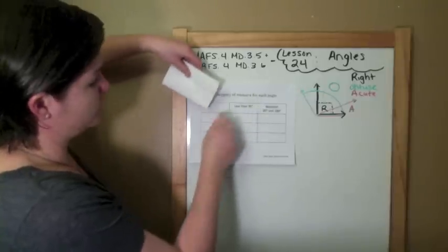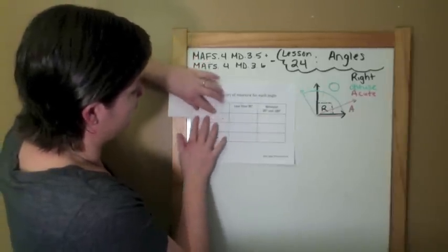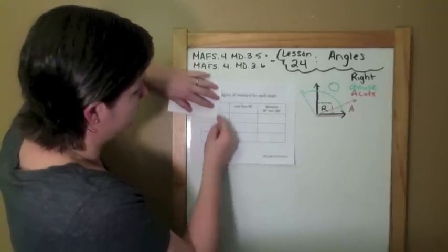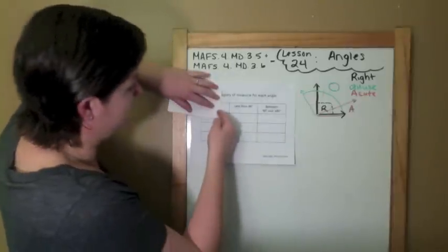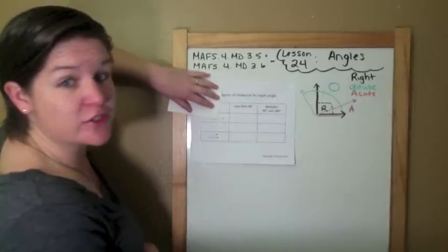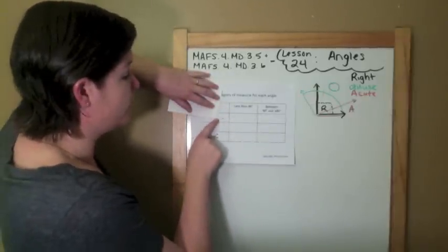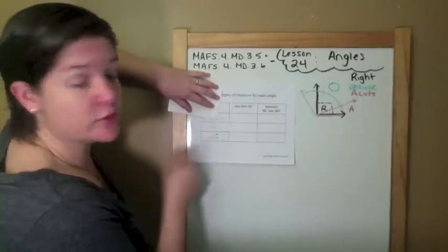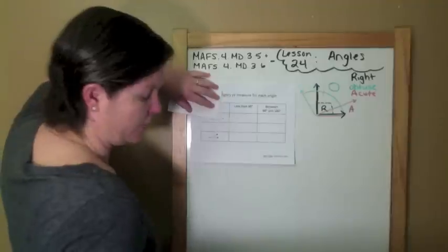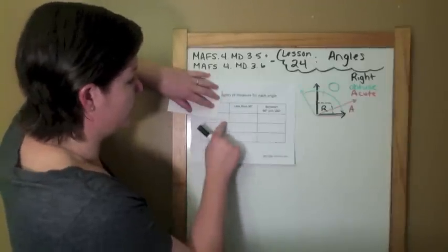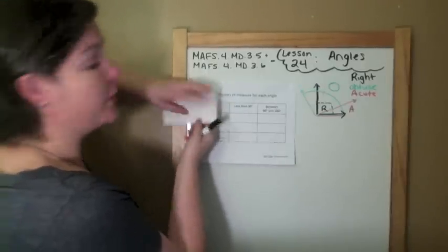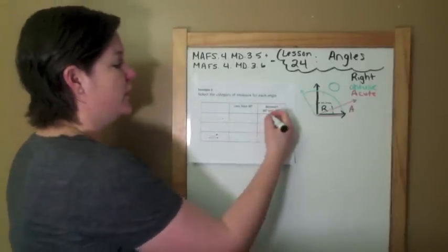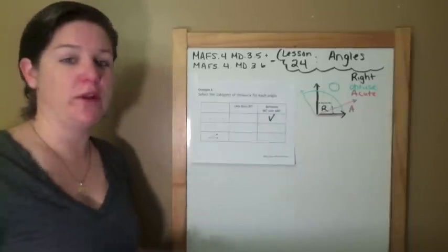So what you do is you take your square corner and you're going to line it up with one of the rays. And if the other one matches perfectly with the edge, then it's right angle. If you see the line, then it's obtuse. And if you don't see the other ray, then it's acute. So this one is definitely a wide open angle. It's going to be between 90 and 180 degrees.